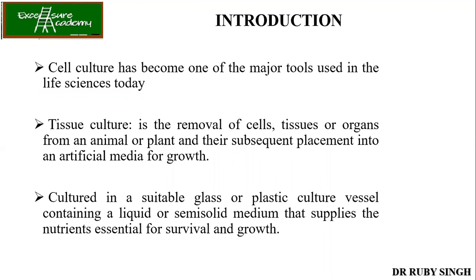Tissue culture is the removal of cells, tissues, or organs from an animal or plant and their subsequent placement into artificial media for growth. Since we are talking about animal tissue culture, we'll focus on the animal part. Cells, tissues, and organs are taken from animals and placed into artificial media designed to provide all the nutrients, minerals, and salts required for growth — replicating the in vivo condition as closely as possible.